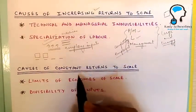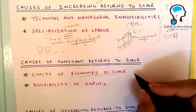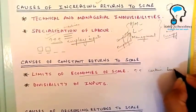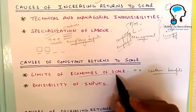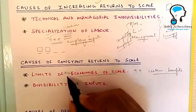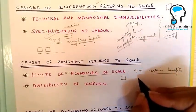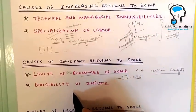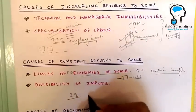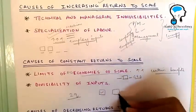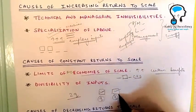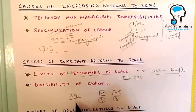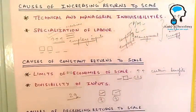Constant Returns to Scale occurs when economies of scale — benefits gained from increasing the scale of production — are exhausted and diseconomies of scale have yet to begin. There is also another way to achieve Constant Returns to Scale: for example, we may double output by setting up two plants that use the same quality and type of workers, raw materials, and machinery. By setting up another plant or factory, we have doubled our output, and this can also be a reason for Constant Returns to Scale.